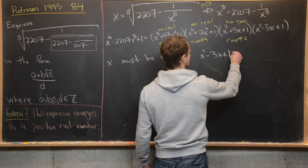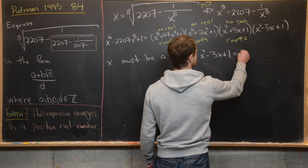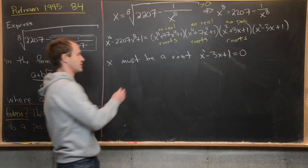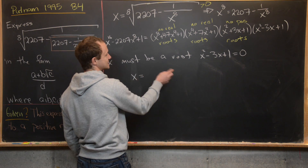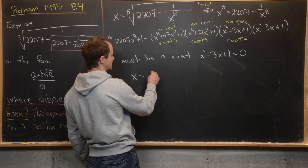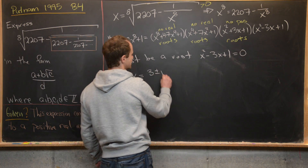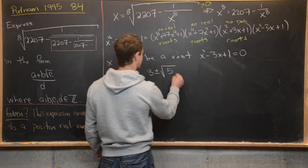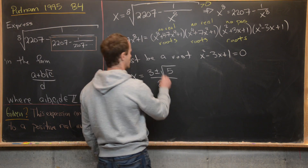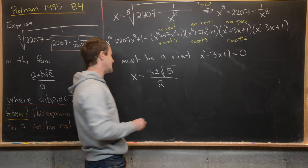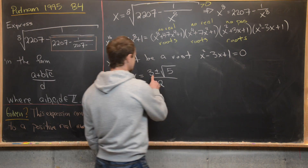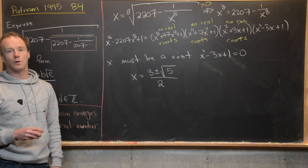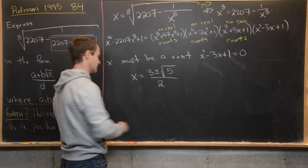Using the quadratic formula on x squared minus 3x plus 1 equals 0, we get x equals (3 ± √5) / 2. So we need to decide: is x equal to (3 + √5)/2 or (3 − √5)/2?